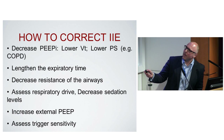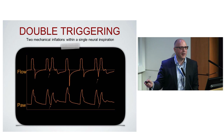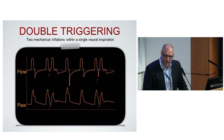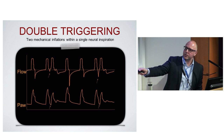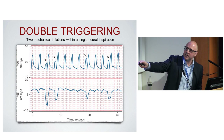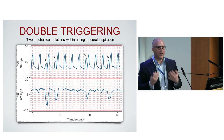This is double triggering. You can see double flow or double pressure then back to normal. Looking at the esophageal pressure, some breaths are very small and some are large. They last so long that the ventilator releases pressure and goes into expiration, but the patient is still breathing in and therefore triggers again. When you see that, there is a timing issue.